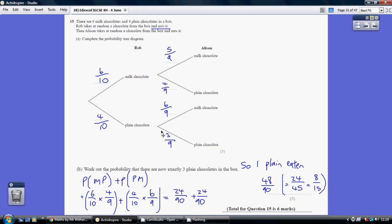Alternatively, we're interested in the scenario where Rob ate a plain, but then Alison ate a milk chocolate sweet. Again, that would just reduce the number of plains by 1. So we're interested in this journey. 4 over 10 and then 6 over 9.